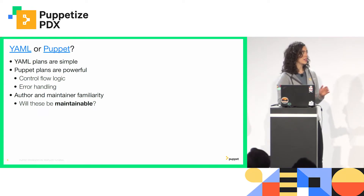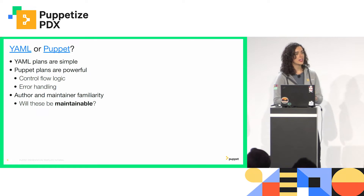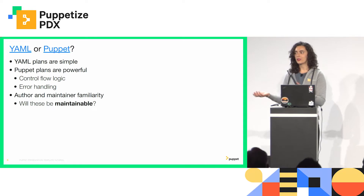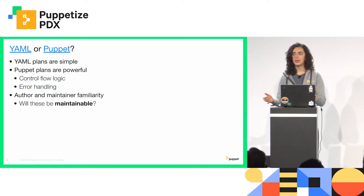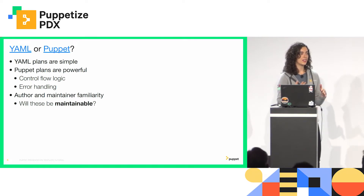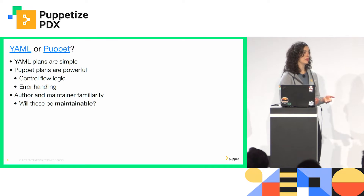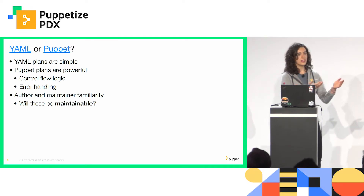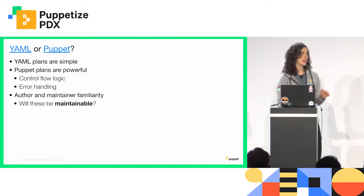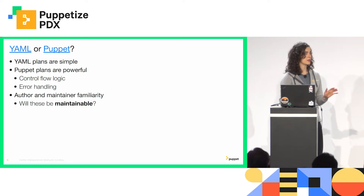YAML and Puppet plans are subtly different. YAML, because it is a data serialization language, doesn't have control logic — no branching, if statements, or for loops. Puppet plans, because they are a scripting language, do have those. One really important feature that enables is more fine-grained error handling: you can say if these nodes error, handle it this way, otherwise continue. That's the main technical difference between YAML and Puppet plans in terms of capabilities.